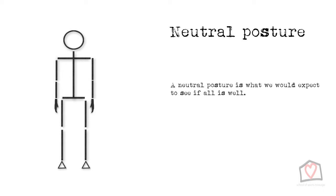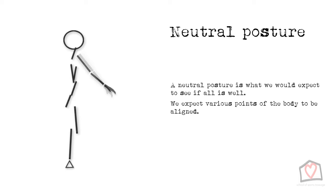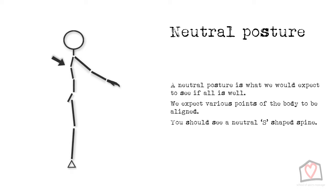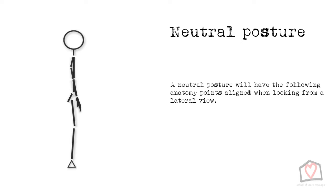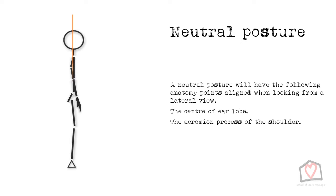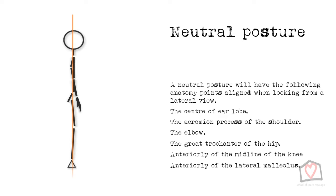Let's start with a neutral posture. This is what you would expect to see if all is well. We would expect various points of the body to be aligned. When looking for a neutral posture, you should see a neutral spine, meaning the four curves of the spine are balanced, creating an S shape, so the pressures and stresses are evenly distributed through the spine. The following anatomy points should all line up when looking at someone from a lateral view. If you were to drop a plumb line down from the centre of the head, you would want it to go through the centre of the earlobe, the acromion process of the shoulder, the elbow, the greater trochanter of the hip, slightly anteriorly of the midline of the knee, and slightly anterior of the lateral malleolus.